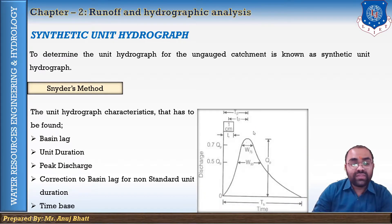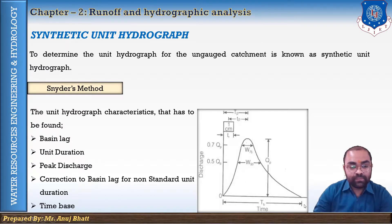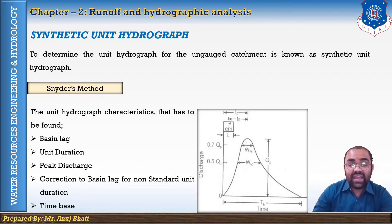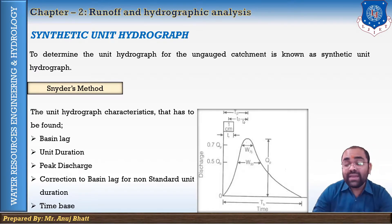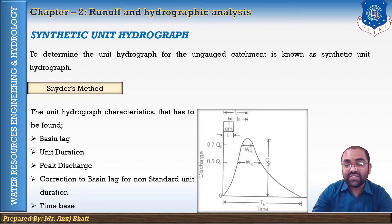A unit hydrograph with these characteristics is shown here. The time base is tb, the peak discharge is qp, the unit duration is t, the basin lag is the tp value, and the correction to the basin lag for non-standard unit duration is capital Tp. All these characteristics are shown in the figure.